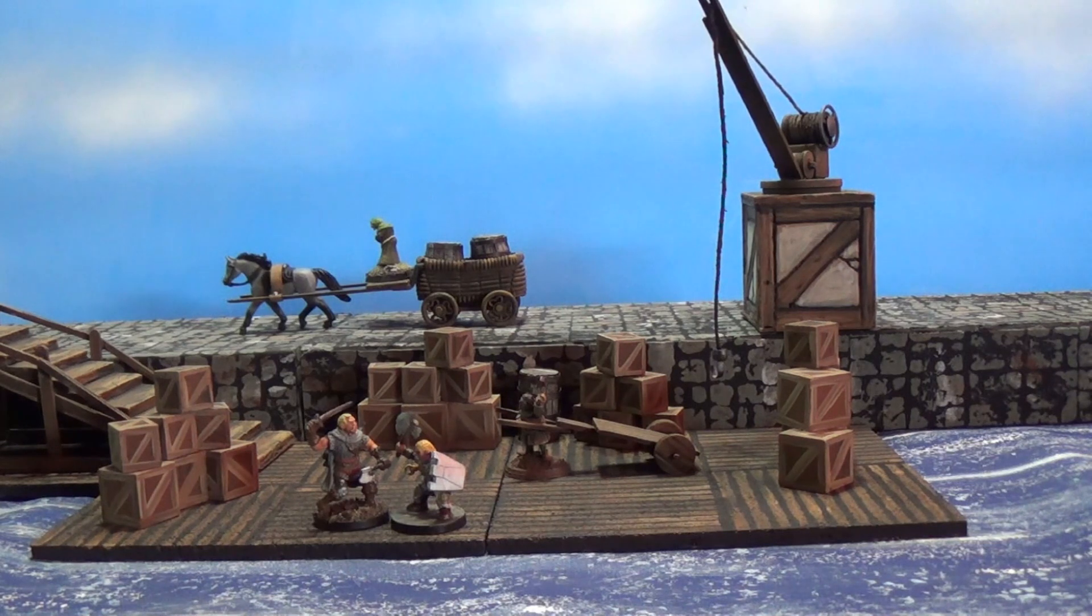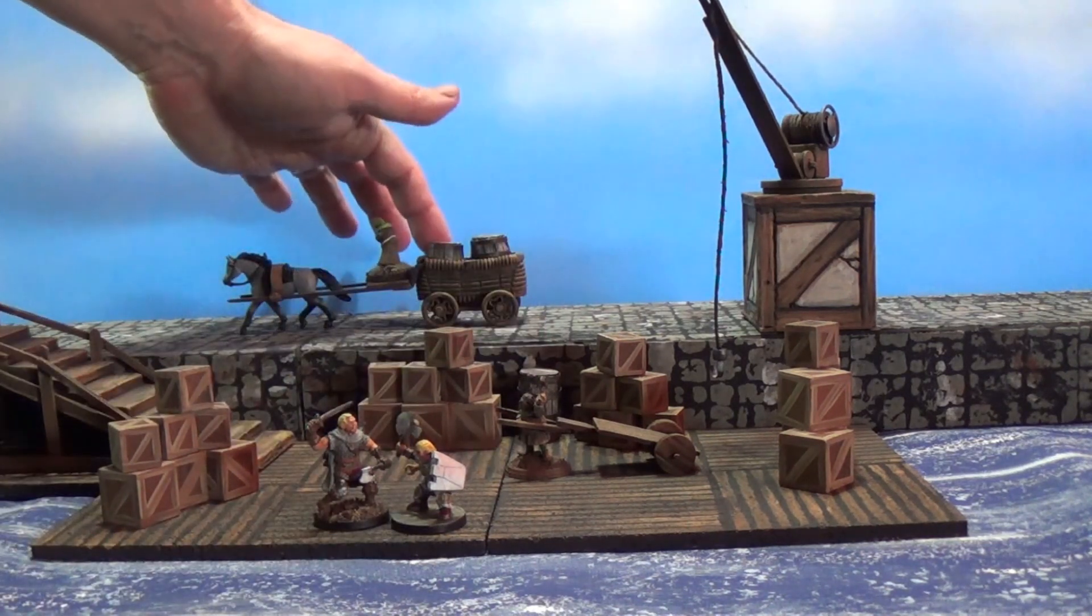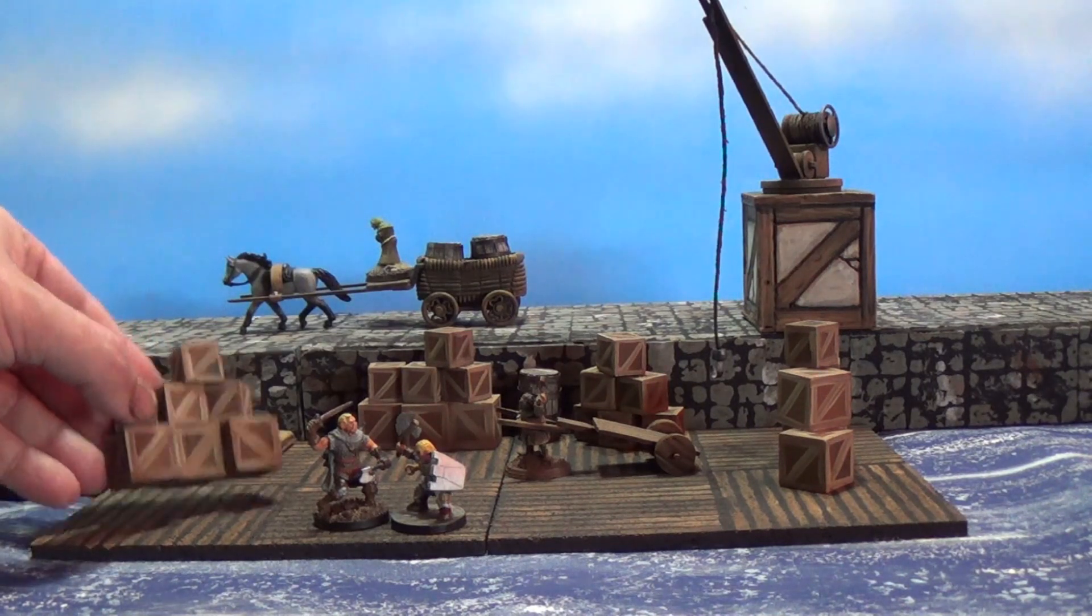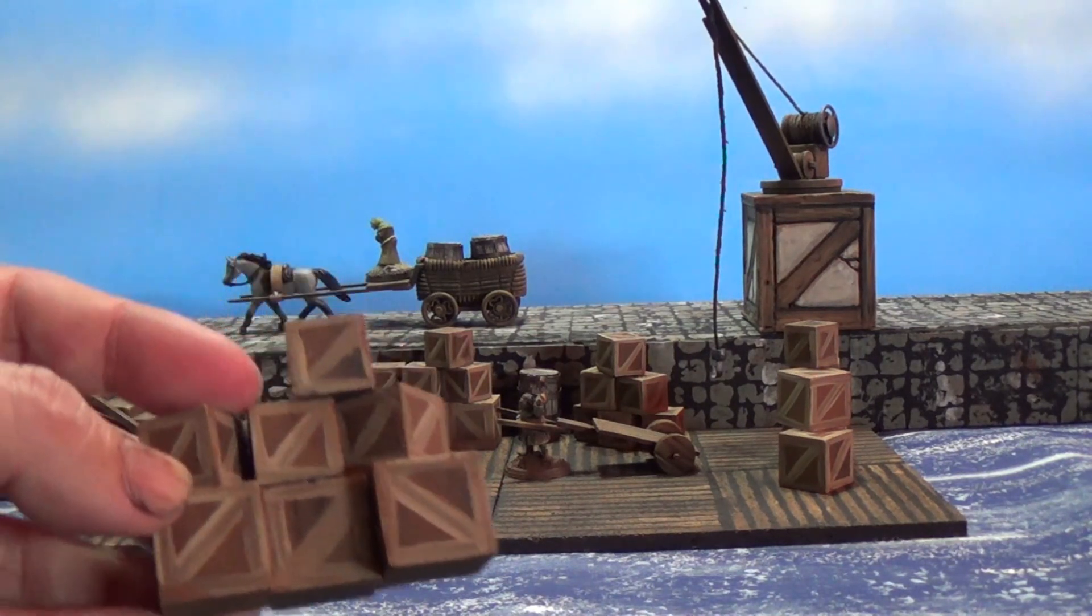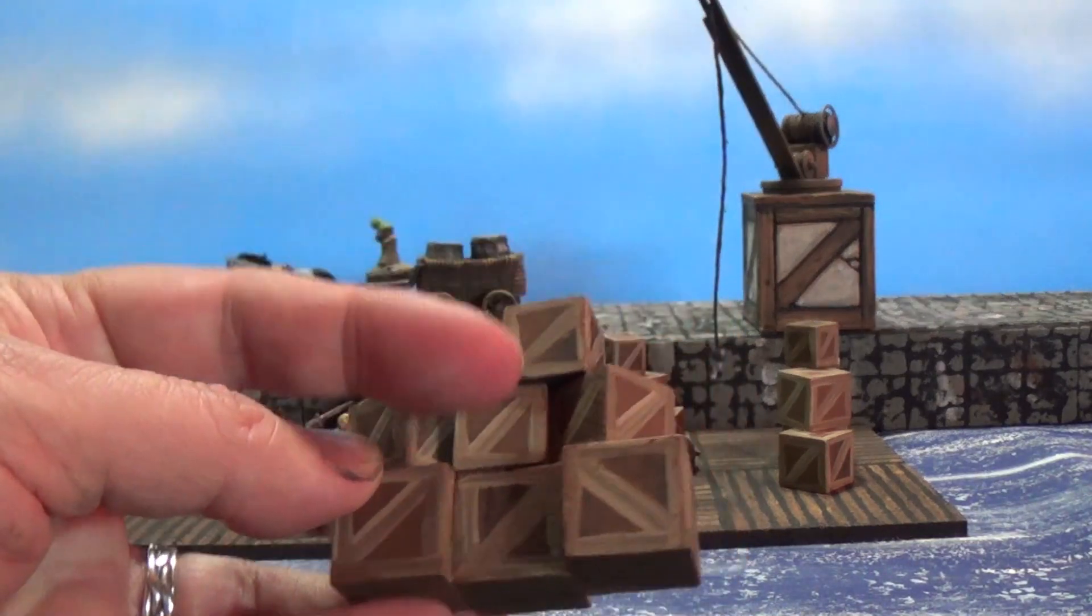Alright, here we have a nice little dock set up with our Tilescape. So really cool. We got the Tilescapes there, the barrel craft. We got the wagon from the wagon craft. And here's our crates. I think they really look good.